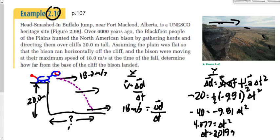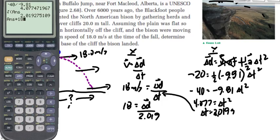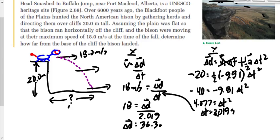How is time helpful? Time is a scalar, so we can transfer it from the Y component into the X component — we can't transfer velocity or displacement between components, but we can transfer time. So: 18 = d / 2.019. Multiply both sides by 2.019: displacement = 36.3 meters. The bison landed 36 meters from the base of the cliff.